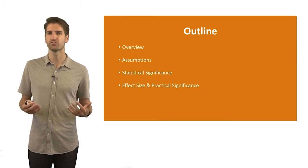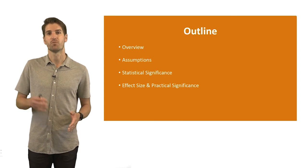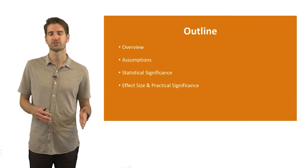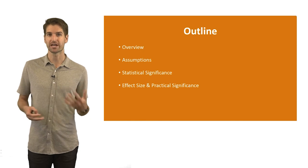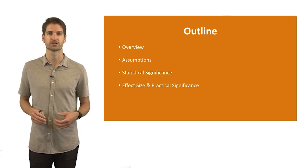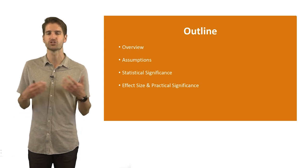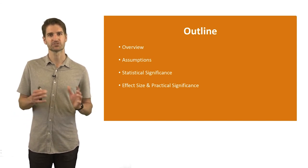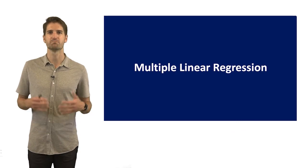In summary, this lecture covered an overview of multiple linear regression — distinguished from simple linear regression by having two or more predictor variables — its statistical assumptions, and the concepts of statistical significance and practical significance. Both simple and multiple linear regression focus on linear relationships and produce regression equations, but multiple linear regression uniquely introduces statistical control and collective variance explained by all predictors. This wraps up the lecture on multiple linear regression.